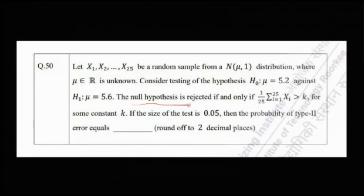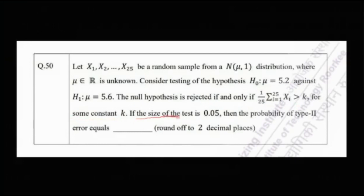The null hypothesis is rejected if and only if the sample mean — (1/25) times the summation of xi — is greater than k, for some constant k. If the size of the test is 0.05, then what is the probability of a type 2 error?